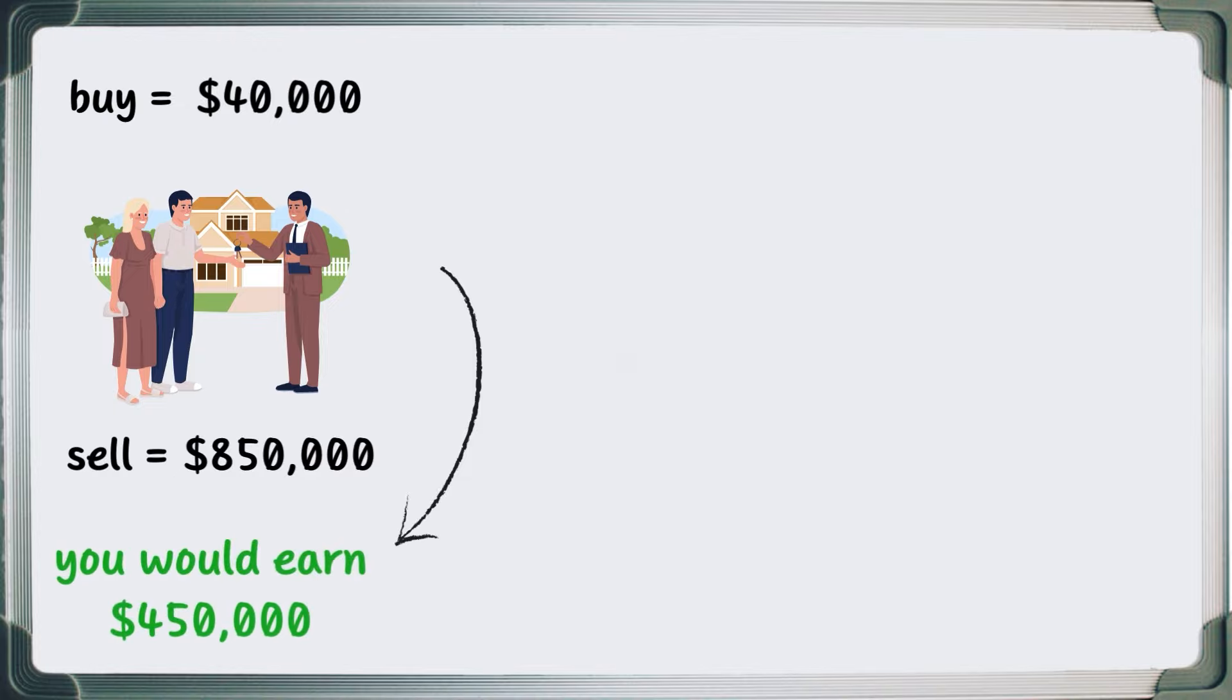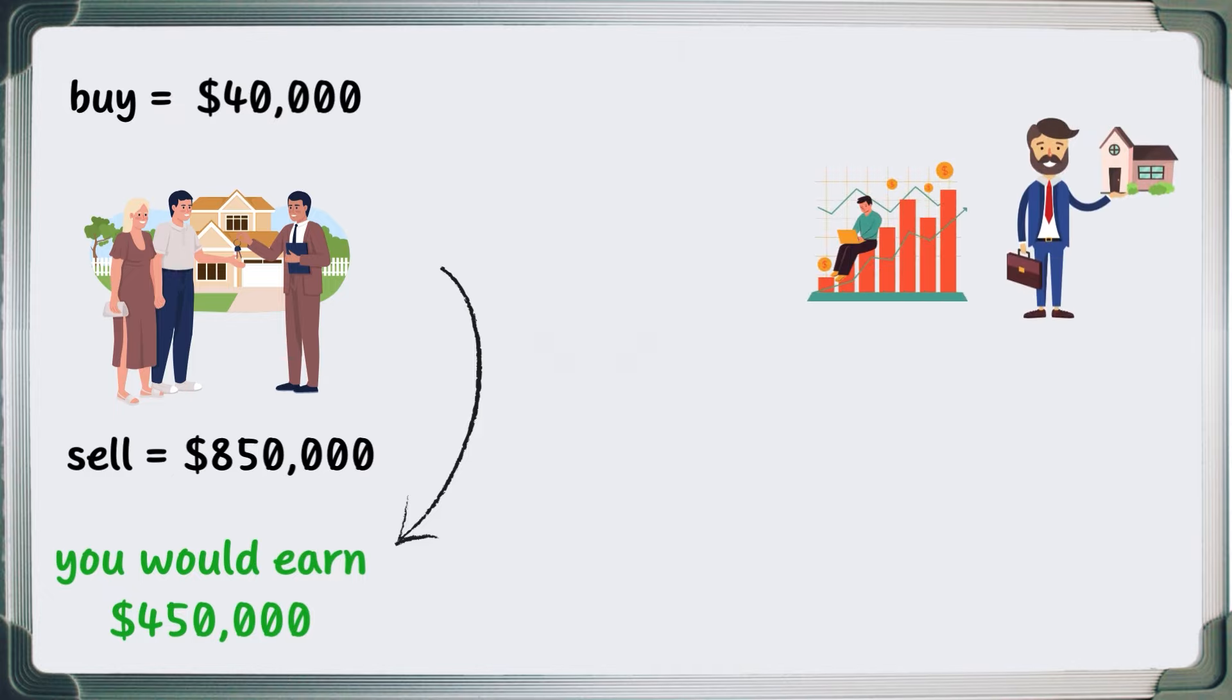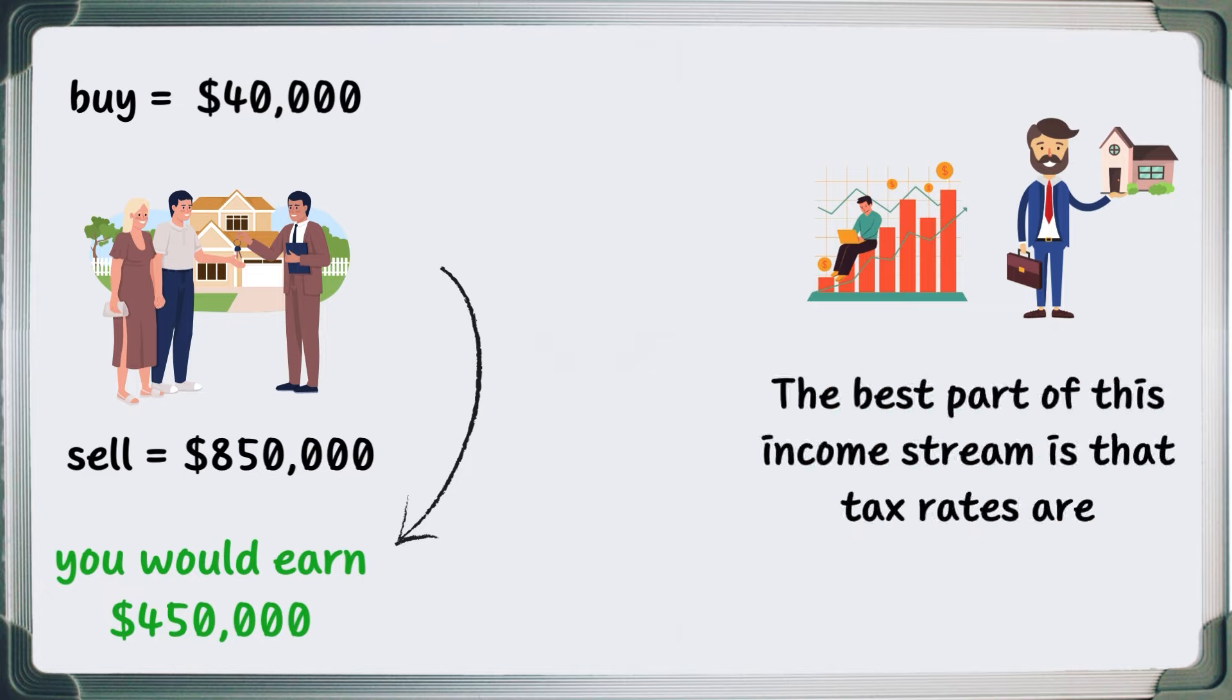The most common types of capital gains are in stocks and real estate, but there are various other assets that can generate this type of income. The best part of this income stream is that tax rates are relatively low, ranging from 10% to 20%. In some cases, this tax can be as low as zero.